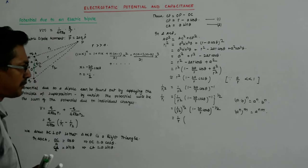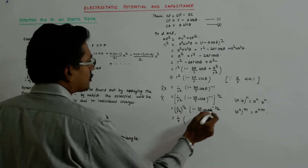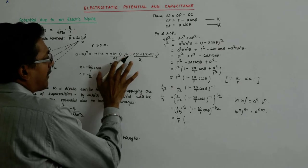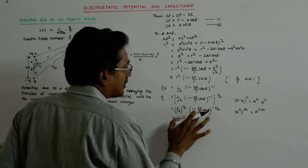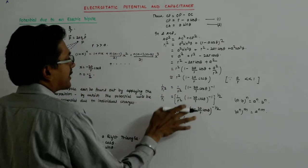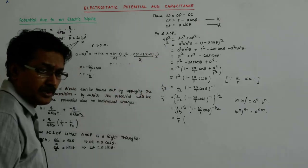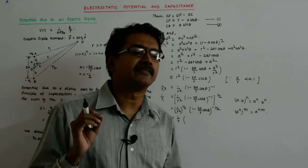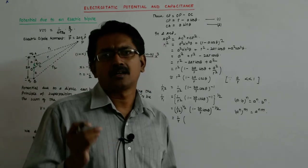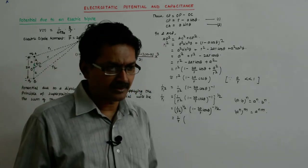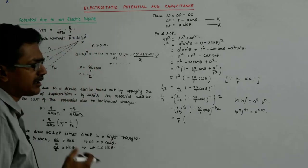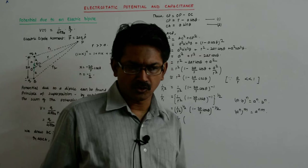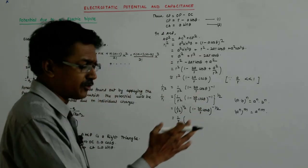So it becomes 1 upon r, and I'm not taking the term beyond this. Because this will start involving a term of a square upon r square, a cube upon r cube and so forth, and that will become very very small. A quantity that is very very smaller than 1 — say 0.1 — if you square it, it becomes 0.01; if you cube it, it becomes 0.001, and it becomes smaller as you go further.